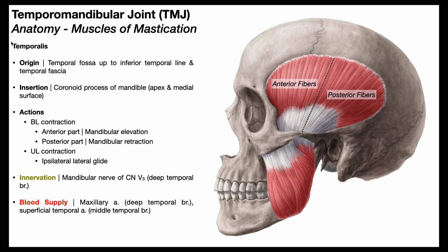The first muscle we're going to discuss is the temporalis muscle, whose muscle belly sits within the temporal fossa. Its origin is the temporal fossa up to the inferior temporal line, and it also has attachments on the temporal fascia. This convergent muscle has fibers that narrow down to a white tendon, which then attaches on the coronoid process of the mandible — specifically the apex and the medial surface of the coronoid process.